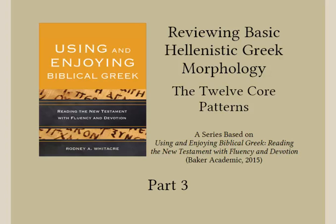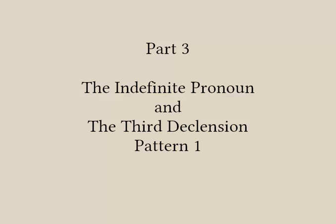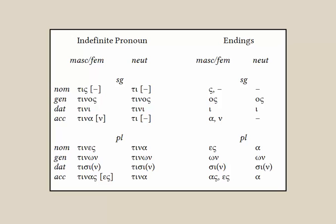Welcome to the third video in this review of basic Greek morphology based on 12 core patterns. In this video we begin our overview of the third declension. It looks like a confusing collection of many paradigms or patterns, but in fact there's only one pattern behind the whole thing. The diversity comes from the endings undergoing various modifications, and seeing the underlying connection to this one core pattern may help you make sense out of the variations and recognize them when you see them in text.